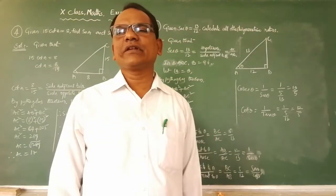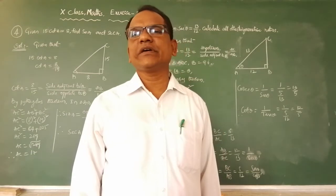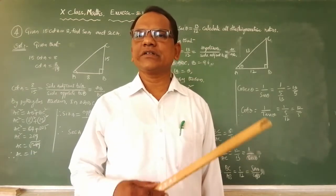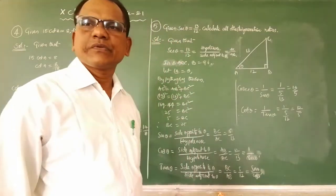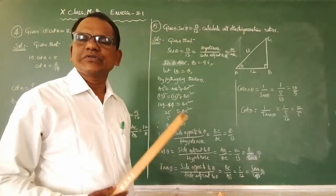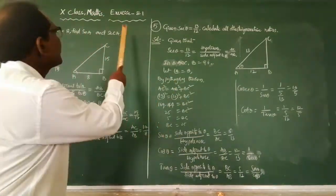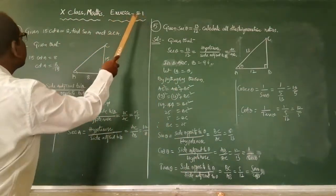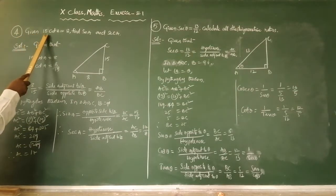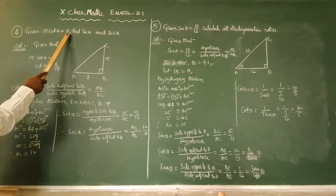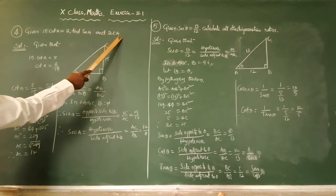Good morning children, welcome to the class. Today I'm going to explain Exercise 8.1 as a continuation — that is the fourth and fifth sums. I'm going to read the fourth problem; you have to verify textbook Exercise 8.1, fourth problem. Given: 15 cot A equals 8, find sin A and sec A.